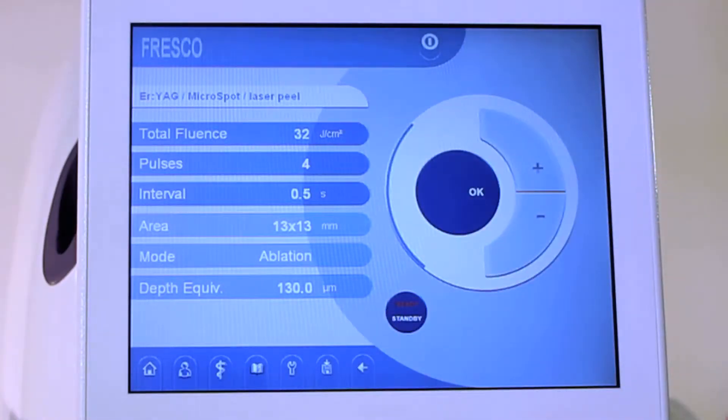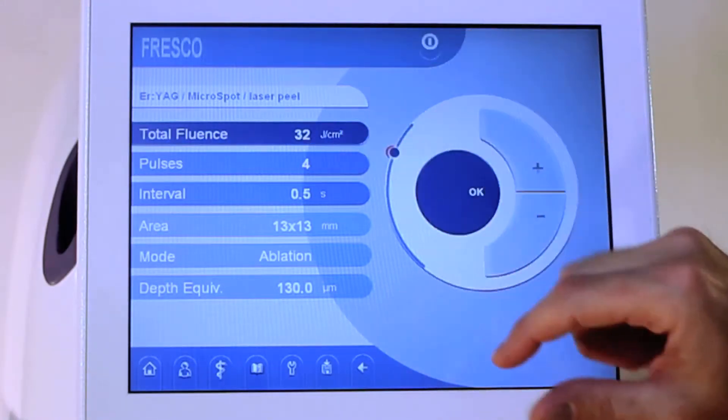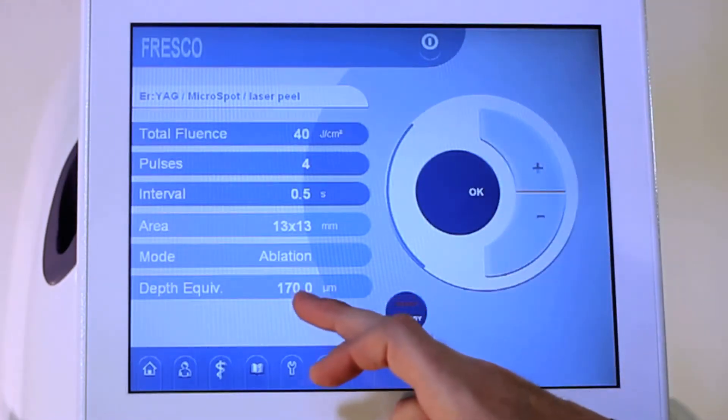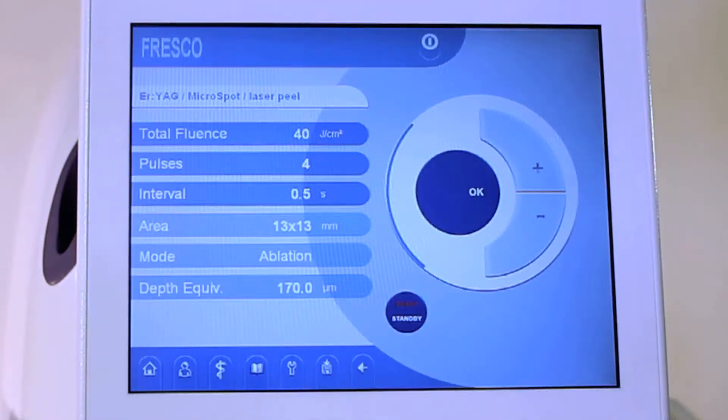We obviously haven't changed the total energy. If we want to change the energy, again, same thing. You tab it up. You must hit OK. That saves it, and again, it then automatically adjusts what your depth equivalent will be.